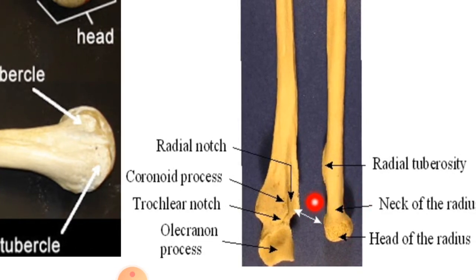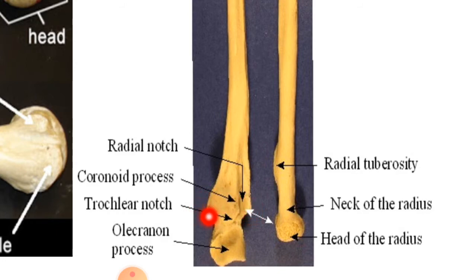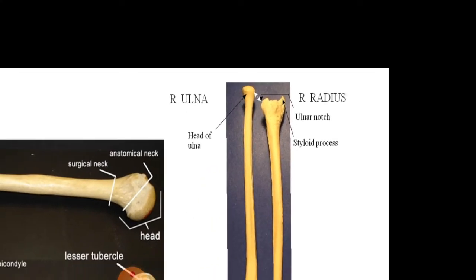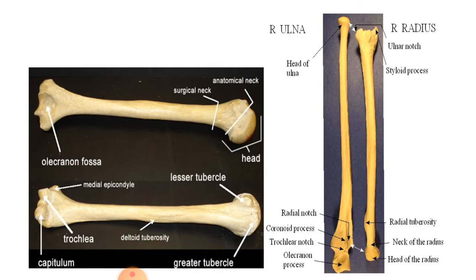At the proximal parts, the radius and ulna take part in the formation of the elbow joint and also form the proximal radioulnar joint with each other. At the distal ends, they form the wrist joint with the carpal bones and the distal radioulnar joint with each other. The ulna lies medially and the radius lies laterally.